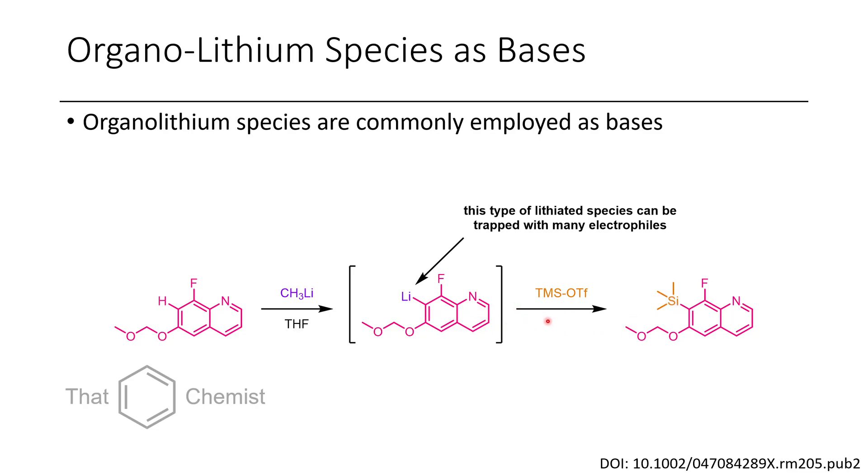They lithiate that position and then trap it with an electrophile, which in this case is trimethylsilyl chloride. You could trap this with all sorts of different electrophiles. You could trap it with a carbonyl, with a halogenating agent such as N-bromosuccinimide. You could have a field day with disulfides to make thioethers. There's a lot of choices available.